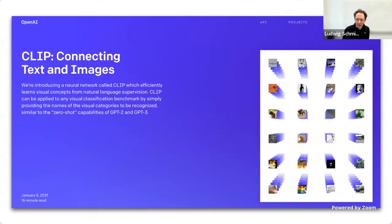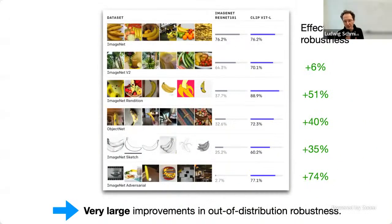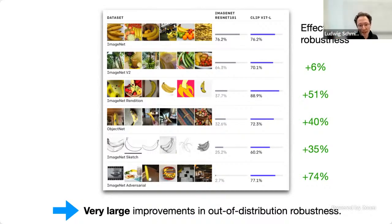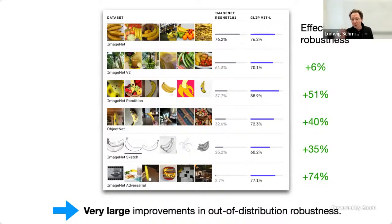CLIP came out in early 2021. Their first results really blew me away because I'd looked at these out-of-distribution test sets for quite a while. They compared their largest CLIP ViT-L to an ImageNet-trained ResNet-101 and got plus 6 percentage points on ImageNet V2, plus 50 on ImageNet R, plus 40 on ObjectNet, plus 35 on ImageNet Sketch, and plus 74 on ImageNet A. These are very large gains. In the ImageNet-related literature, people write papers about small single-digit gains — double-digit gains are basically unheard of.